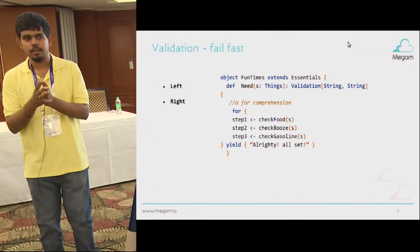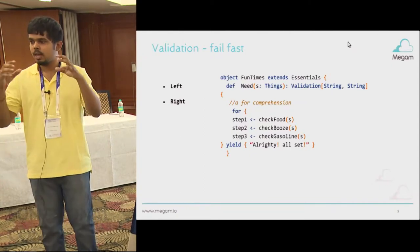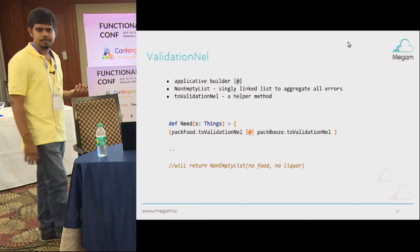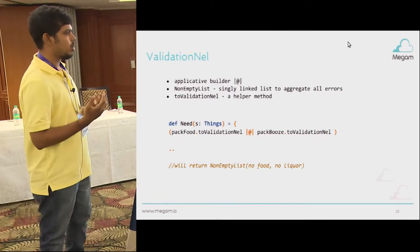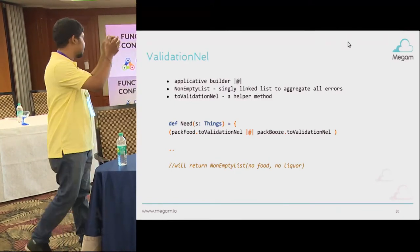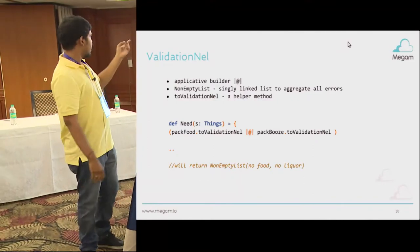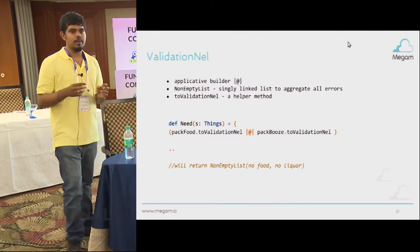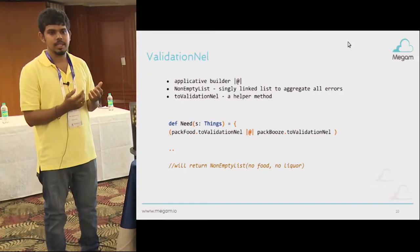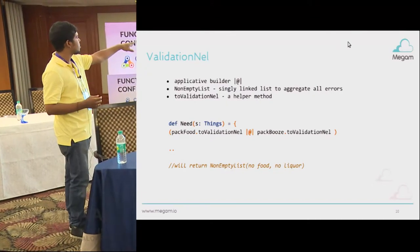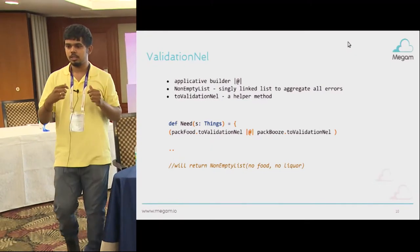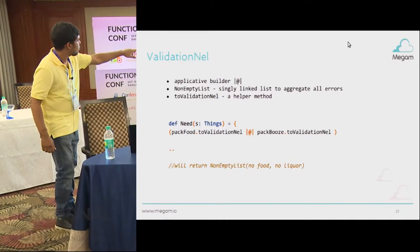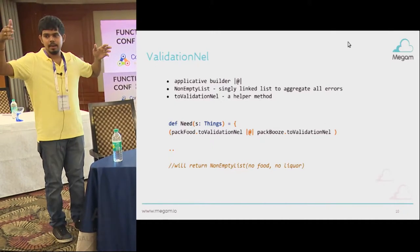What if you want to aggregate all the failures and give them to the user? You don't want to throw exceptions; you want to aggregate all failures. So you use something called ValidationNel — a non-empty list. ValidationNel is pretty much the same thing but you put the errors in a non-empty linked list to aggregate all the errors. Using an applicative builder, you can write checkFood.toValidationNel — toValidationNel is a helper method that converts it and sends it as a non-empty list. It will return a non-empty list of no-food, no-linkup. That's how you use the applicative builder.